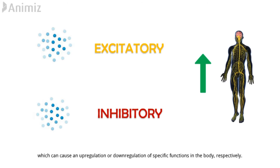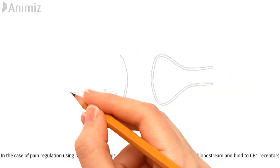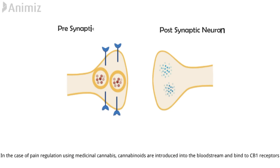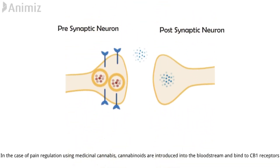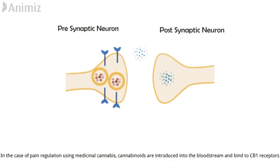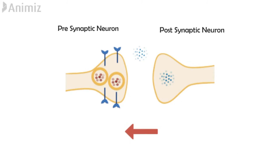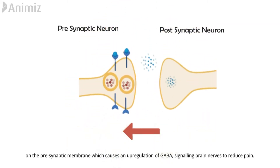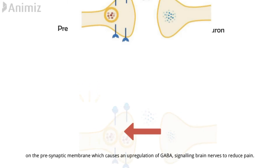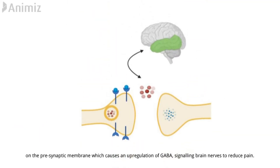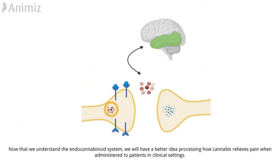This can cause an upregulation or downregulation of specific functions in the body respectively. In the case of pain regulation using medicinal cannabis, cannabinoids are introduced into the bloodstream and bind to CB1 receptors on the presynaptic neuron, which causes an upregulation of GABA signaling, signaling brain nerves to reduce pain.